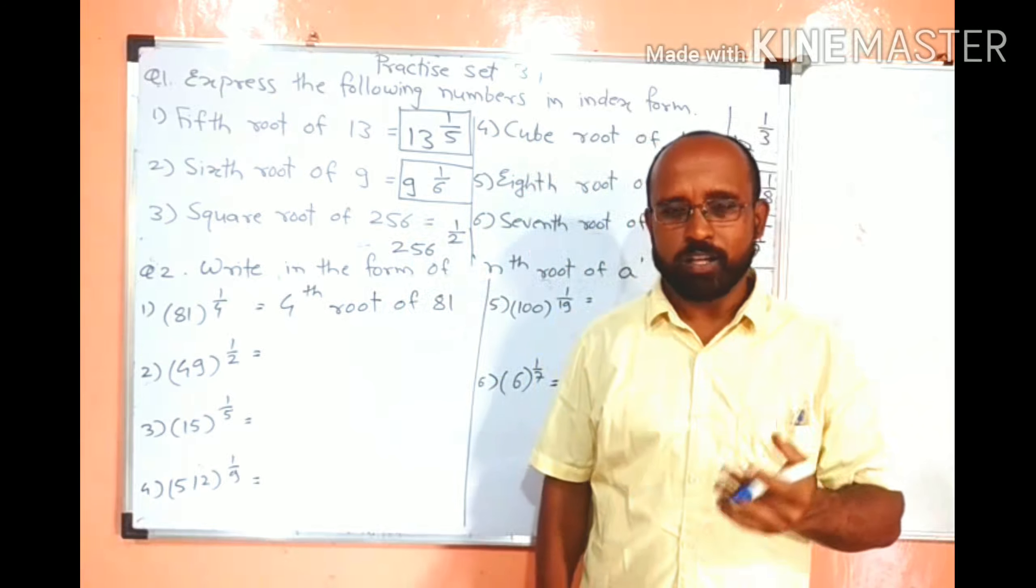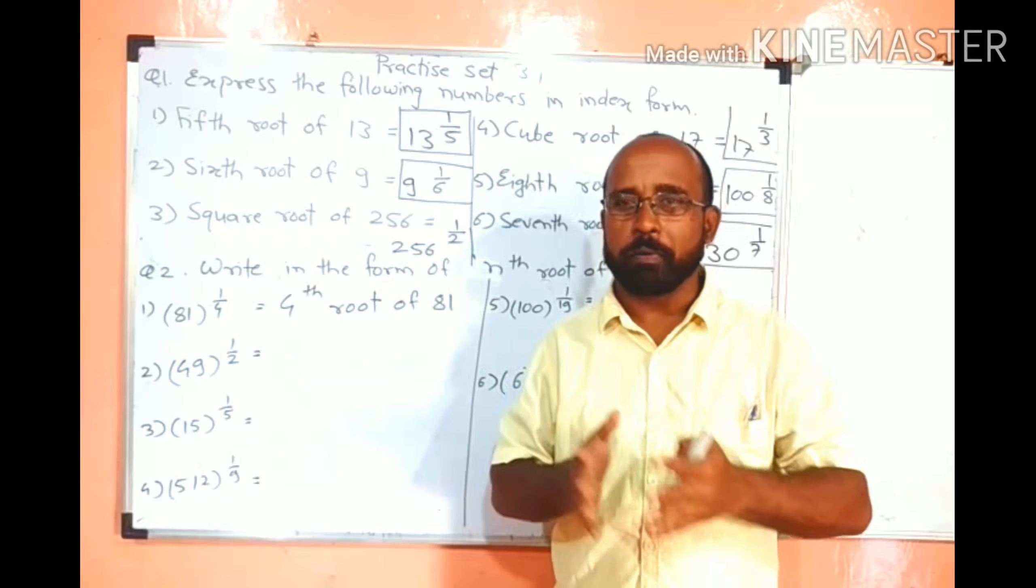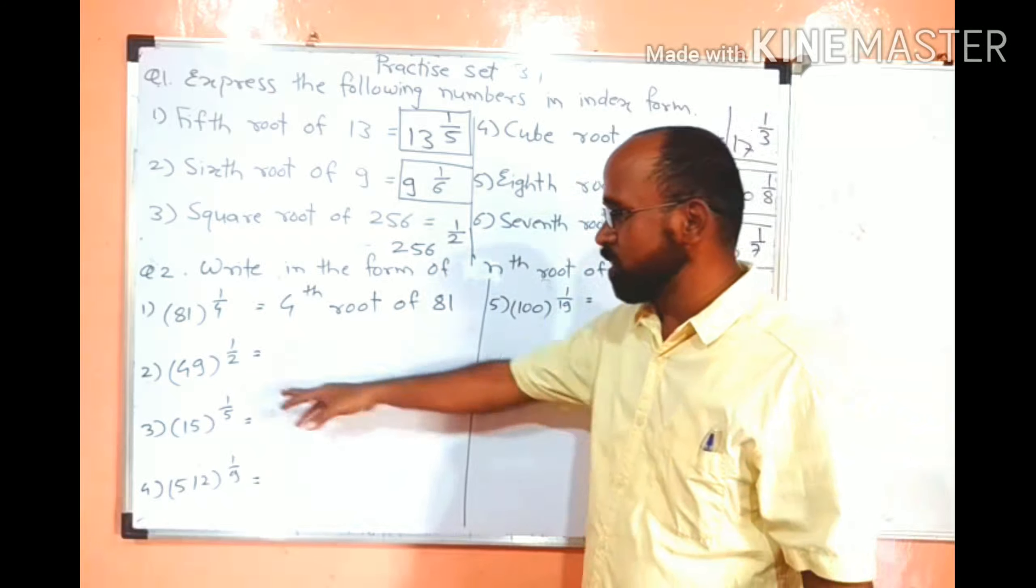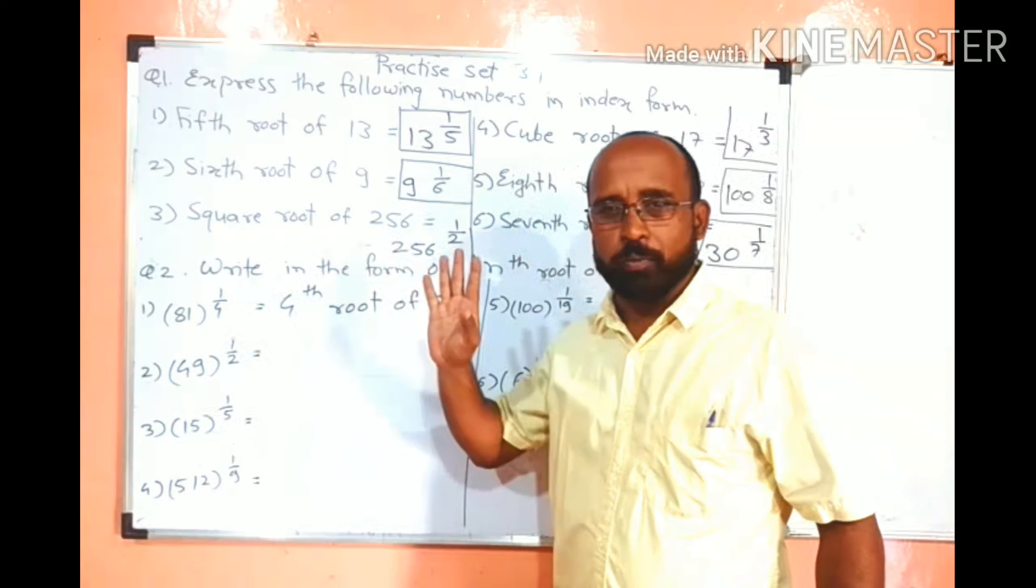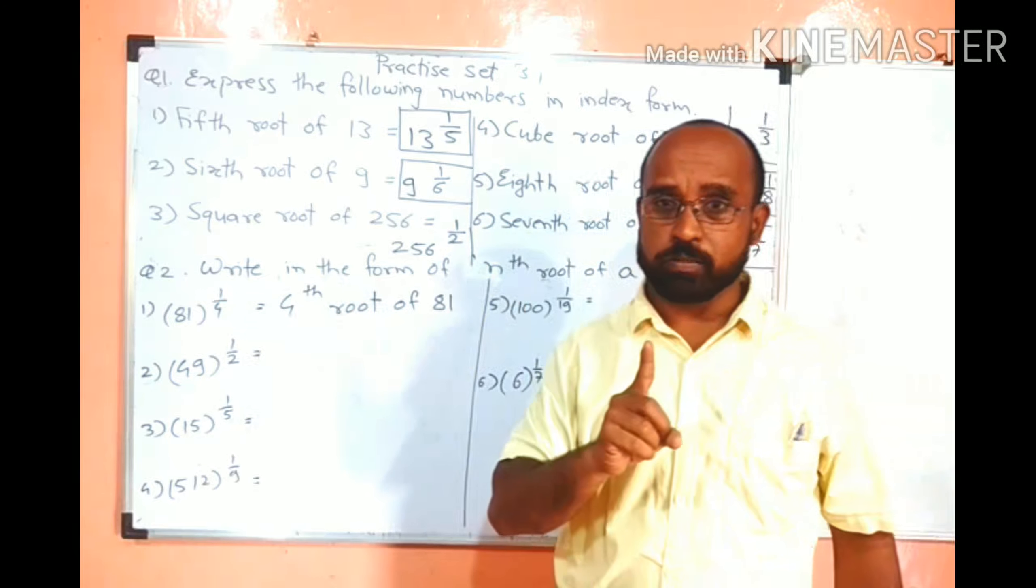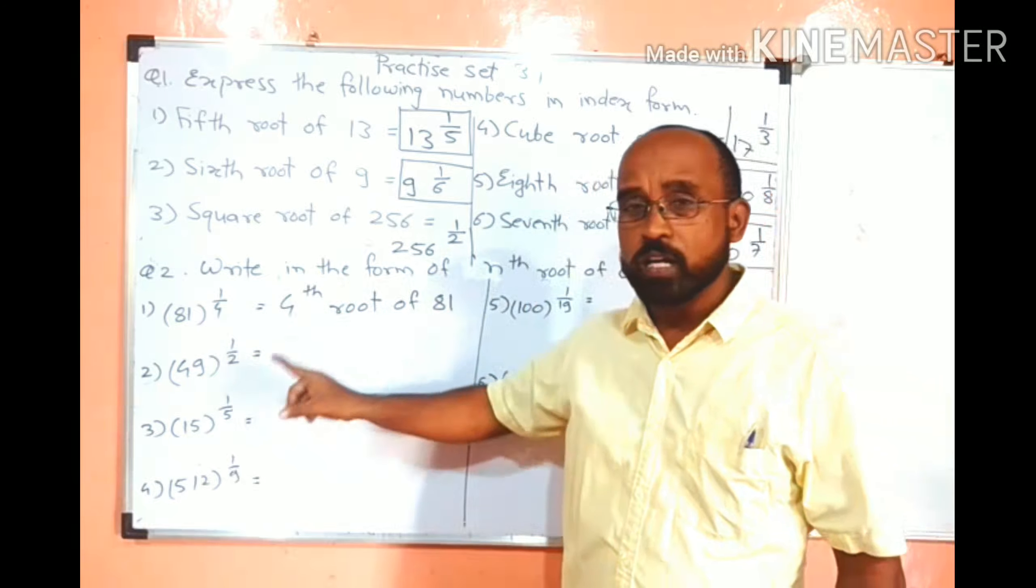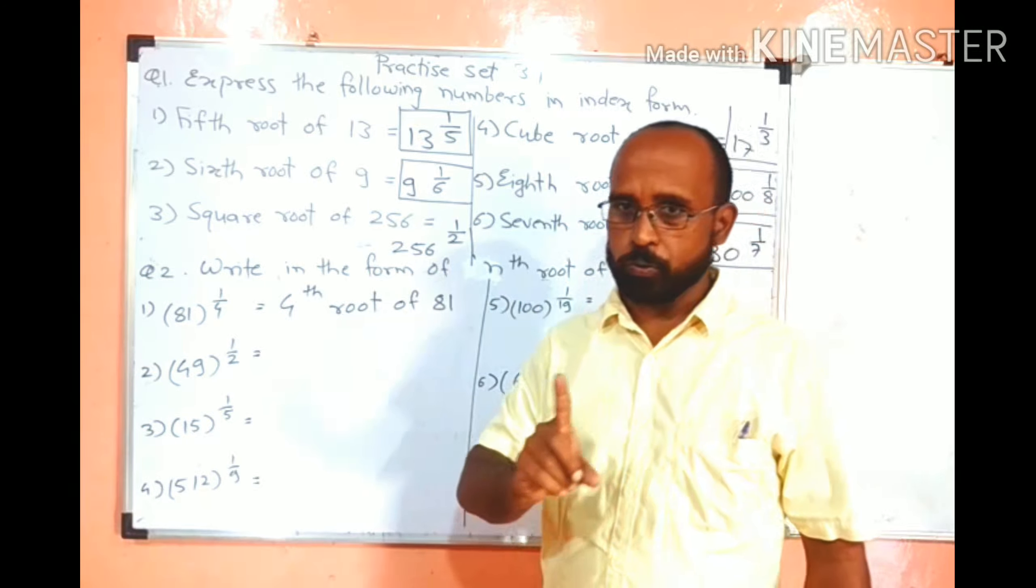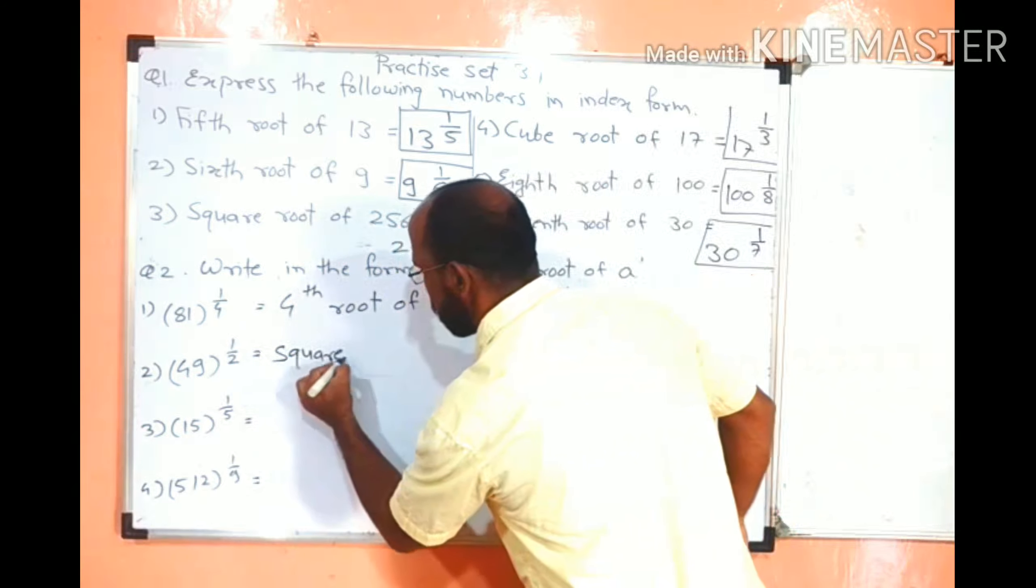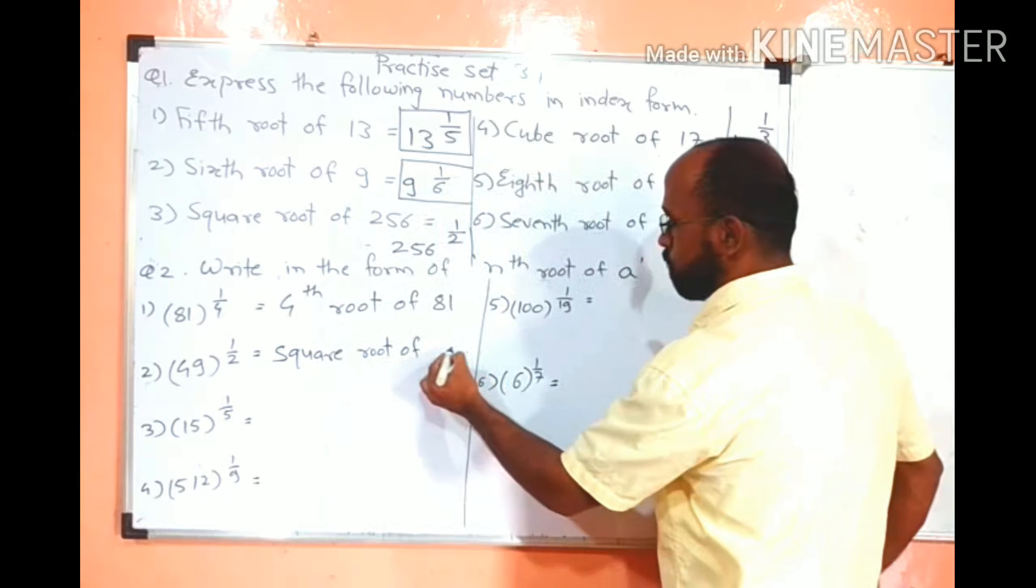49 raised to 1 upon 2. So here we can write second root but it is admissible or I will say a little bit compulsory, mandated to write square root. Don't write second root. Okay. So square root of 49.